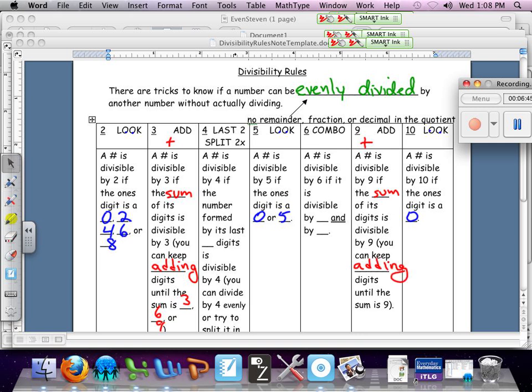So again, you could go ahead and go, I don't want to think about my 9 facts. I'm just going to add up those digits to see if that gets me somewhere that I know. So again, 2, 5, and 10, typically the easiest. 3 and 9, fairly easy, but you do have to show a little bit of work.